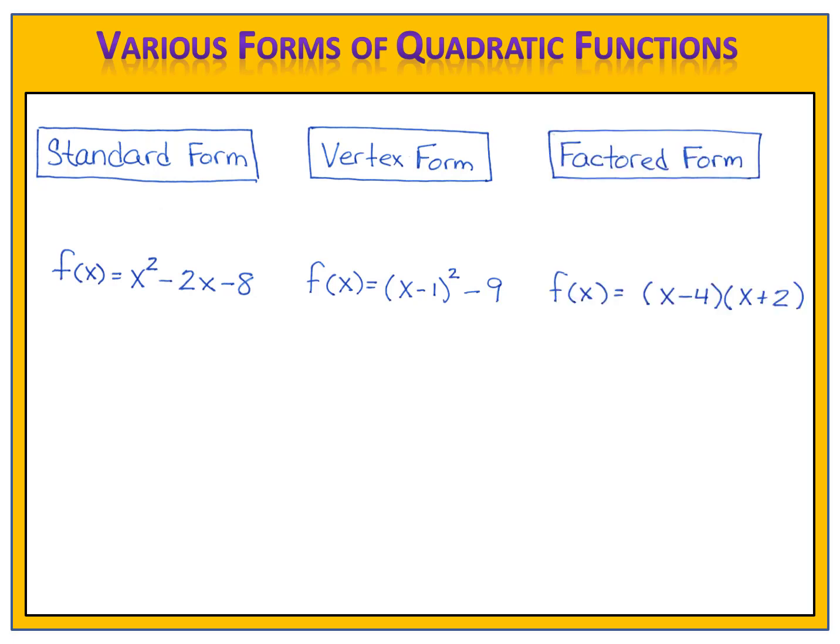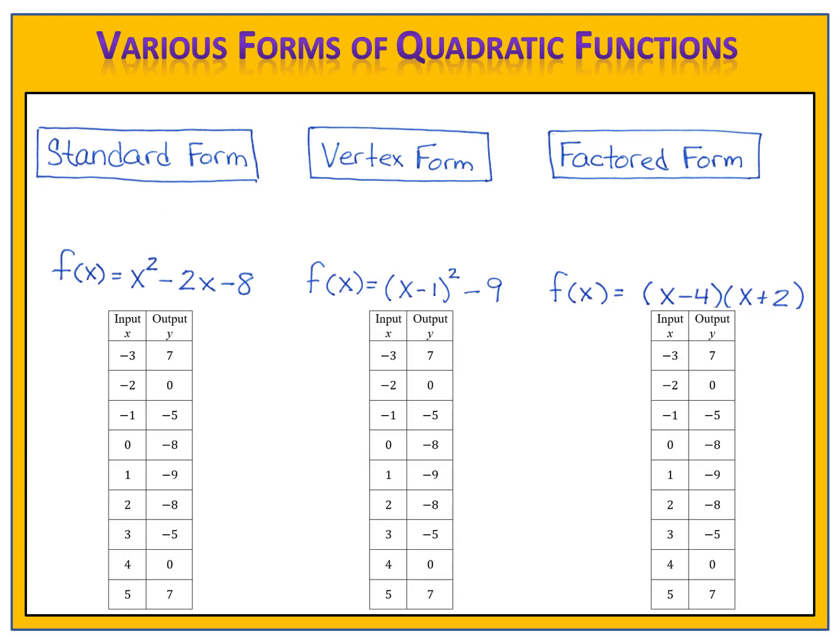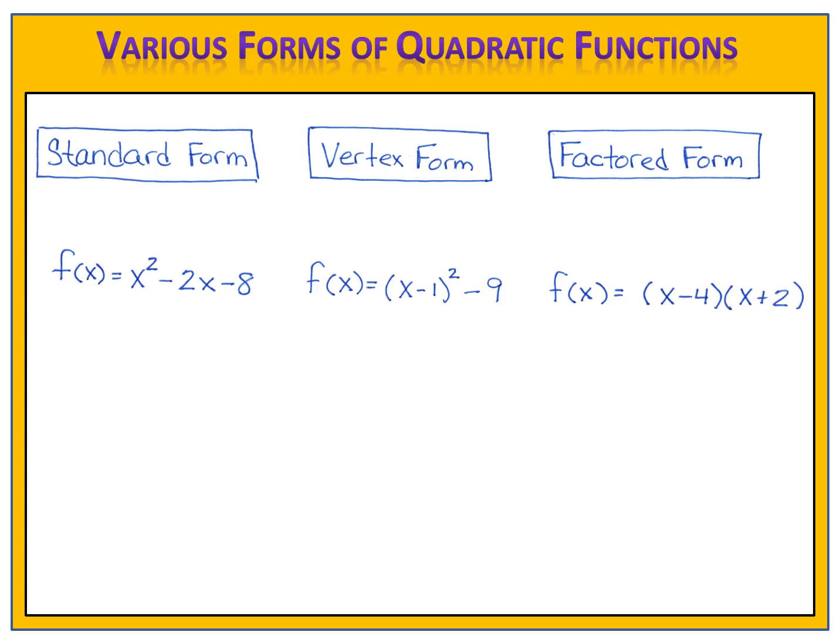These functions all look very different, but they're actually equivalent. If we were to look at the graph for each, the graphs are exactly identical. And if we were to look at input and output tables, the input and output tables are 100% the same. So why would we want to choose standard form, or vertex form, or factored form over the others? Well, the truth is that each of them provides different types of information.